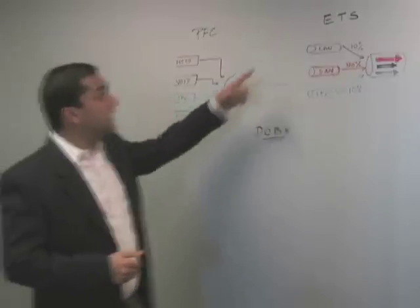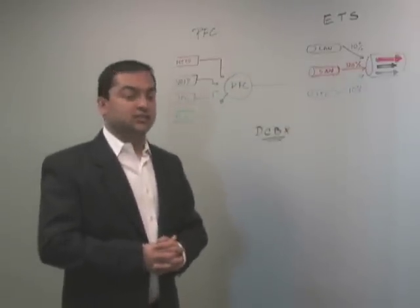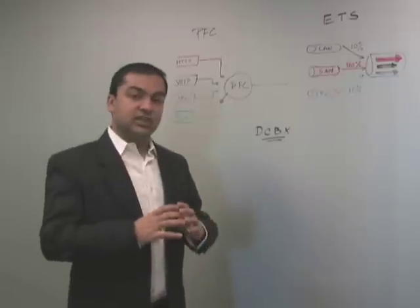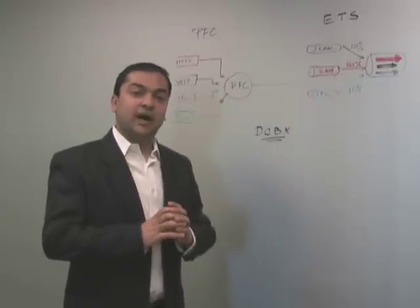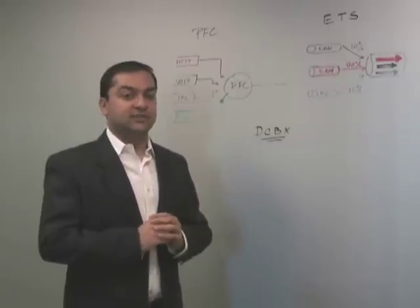Brocade CNAs also implement ETS, Enhanced Transmission Selection Protocol, which is the ability to take your 10-Gigabit CEE pipe and carve out the bandwidth into different traffic types or priority types.